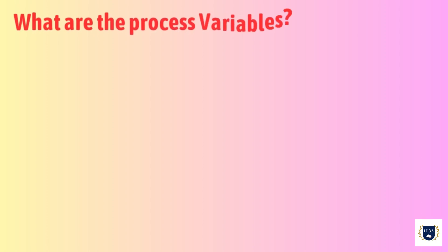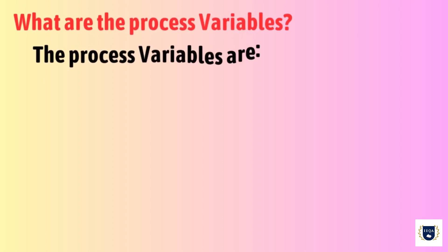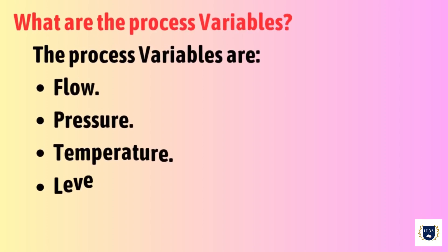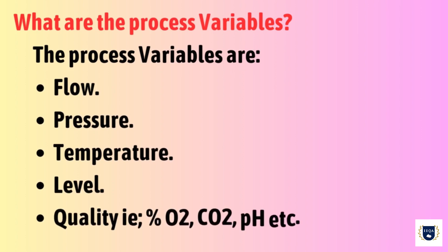What are the process variables? The process variables are flow, pressure, temperature, level, quality—that is percentage of oxygen, carbon dioxide, pH, etc.